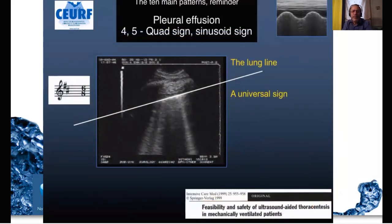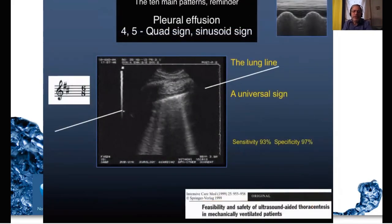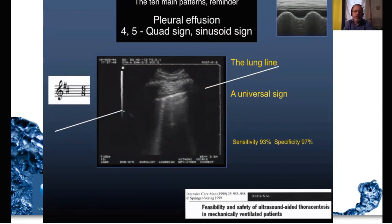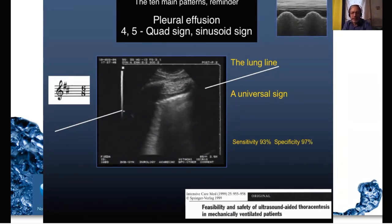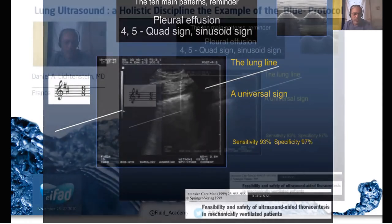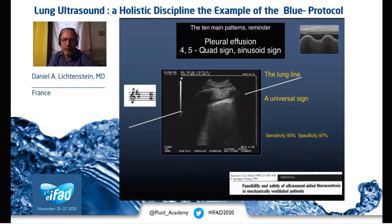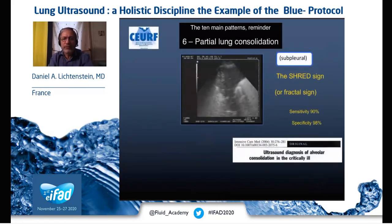Moving rapidly through the signs of pleural effusion: the quad sign is a line parallel to the pleural line that indicates the visceral pleura.